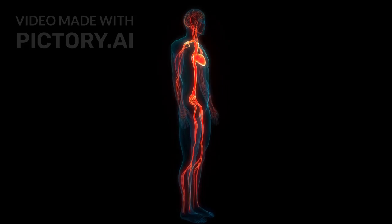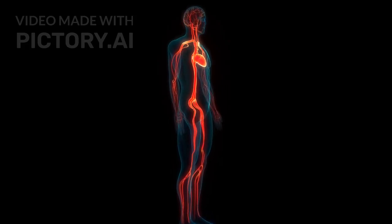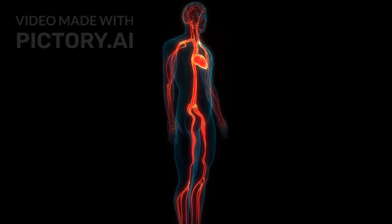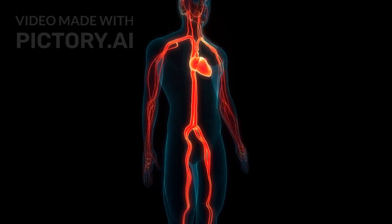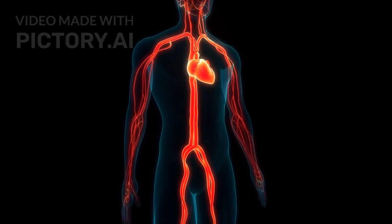Blood is a specialized fluid connective tissue that plays a vital role in transporting oxygen, nutrients, hormones, and waste products throughout the body. Let's explore their structure and functions.